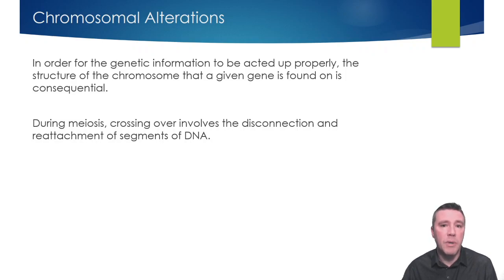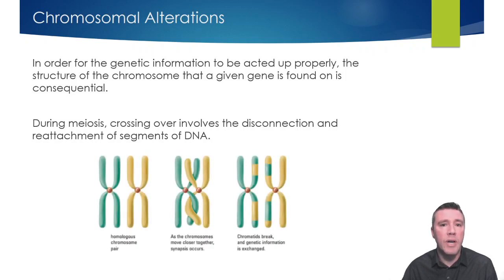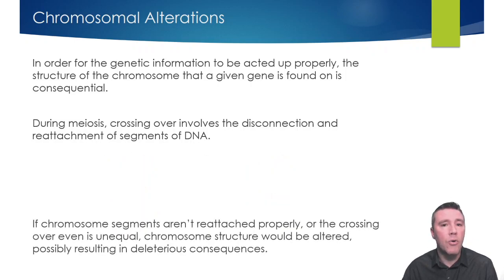Chromatids, especially larger ones, will oftentimes cross over at multiple locations, creating recombinant genetic material wildly different from the original. But if chromosome segments don't get reattached properly, or unequal portions of genetic material are exchanged, chromosome structure is altered and could result in negative consequences.